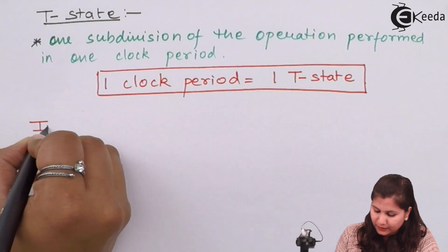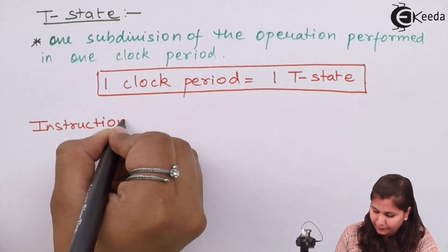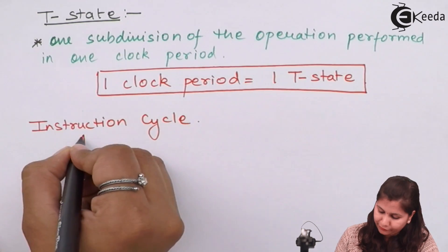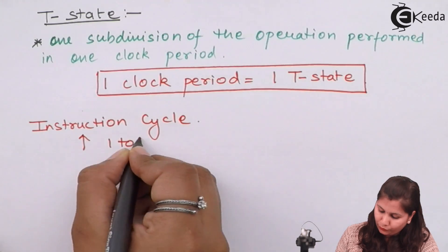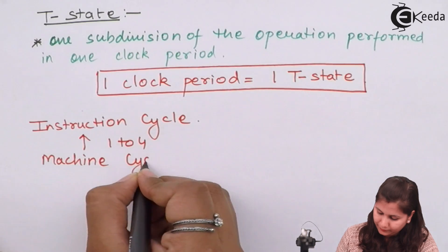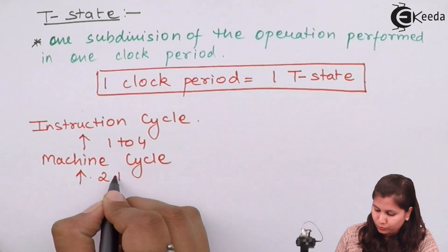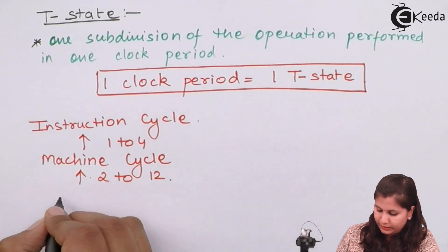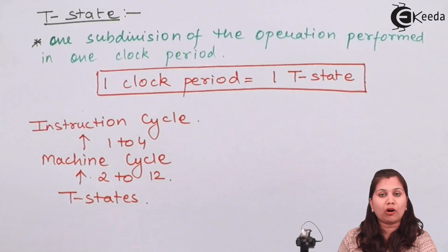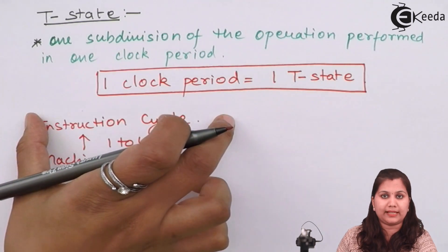In the instruction cycle, we will have one to four machine cycles, and in each machine cycle, we can have two to twelve T states. So the smallest division is the T state, then comes the machine cycle, and then comes the instruction cycle.